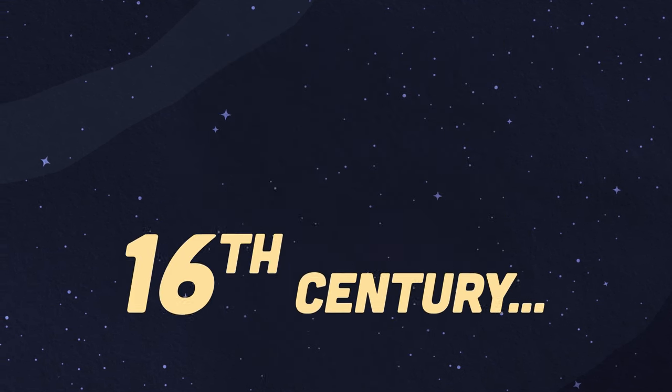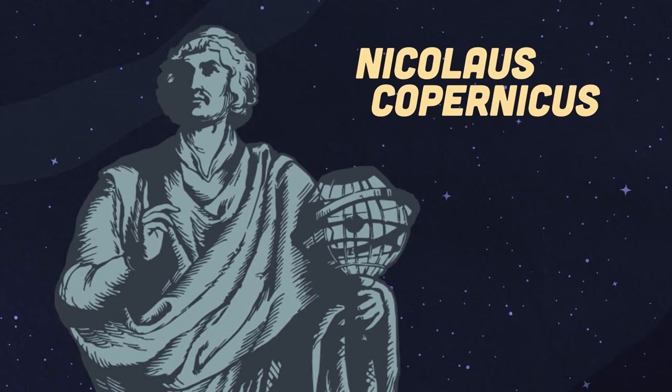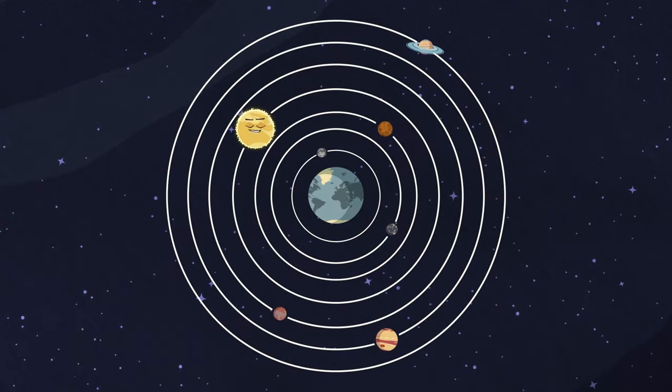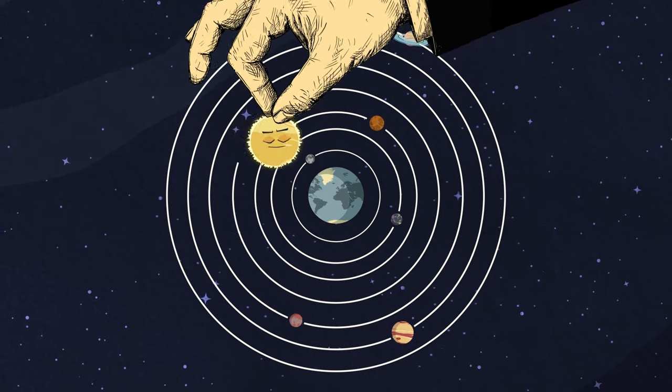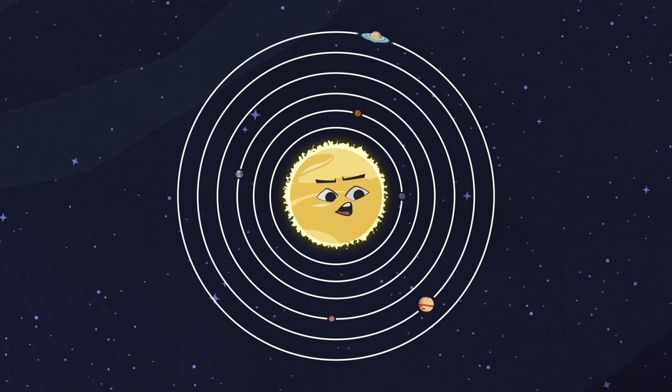But in the 16th century, things began to change. A man named Nicholas Copernicus decided to rearrange. He introduced a new and at the time crazy theory, placing the sun at the center of the solar system, you can see.